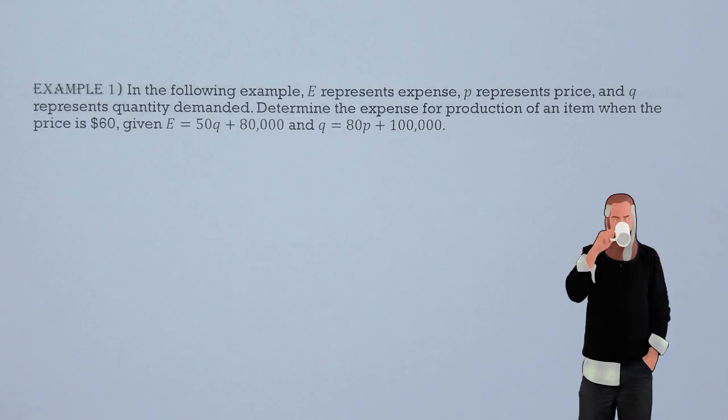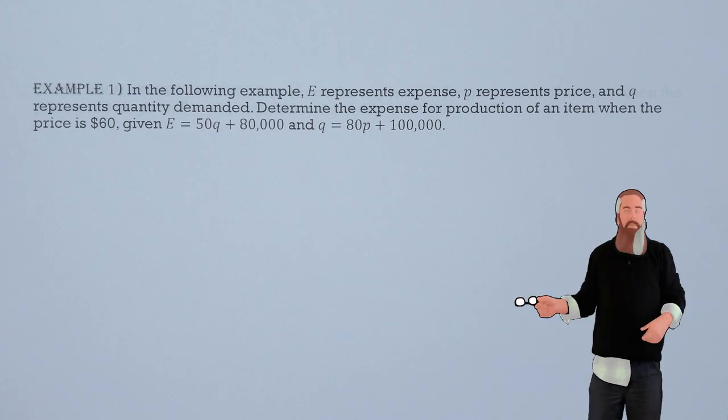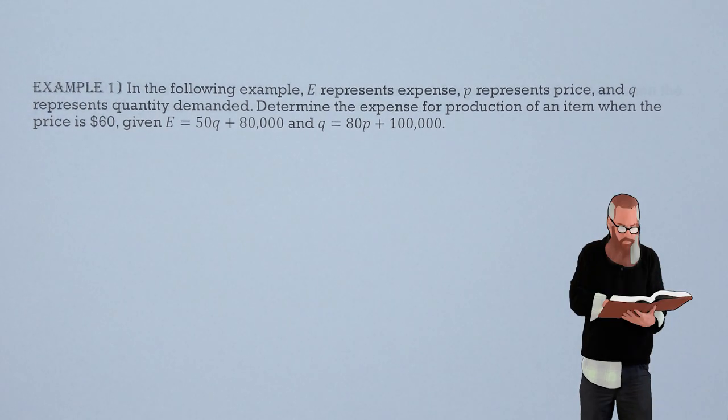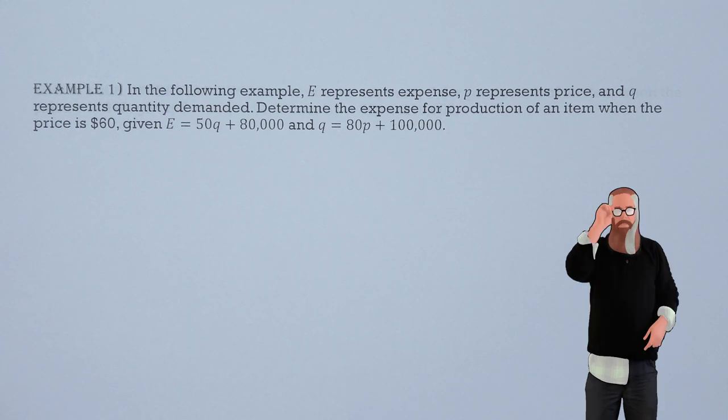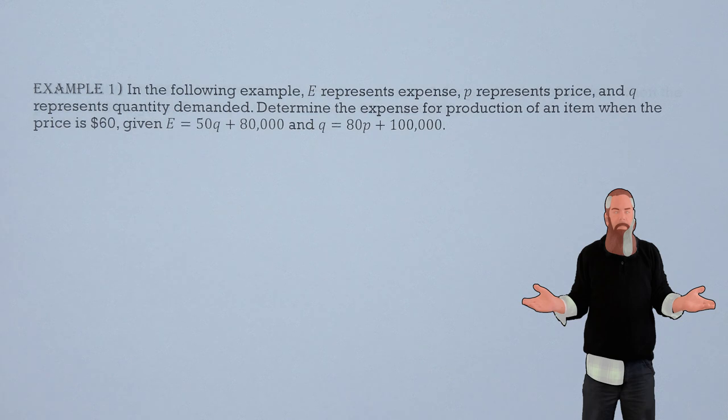E depends on Q, and Q depends on P. To find the value of E at a particular price P, use substitution or express the expense function directly in terms of price. Both methods illustrate the transitive property of dependence.